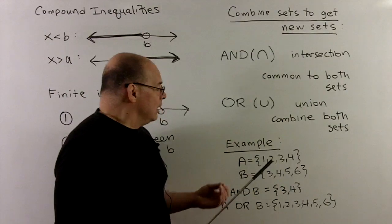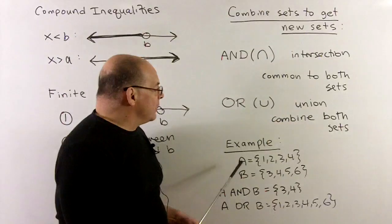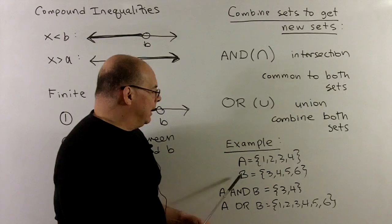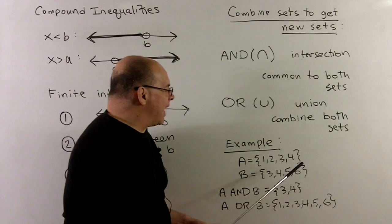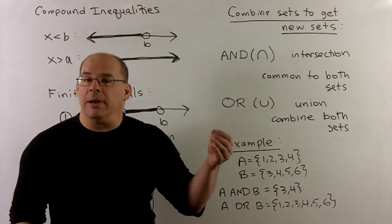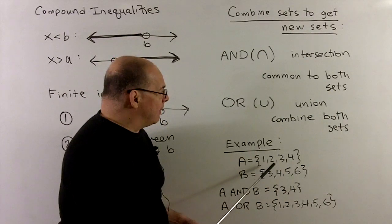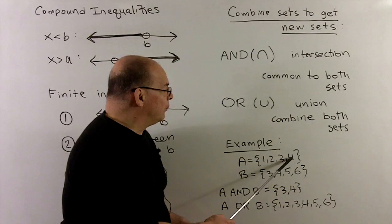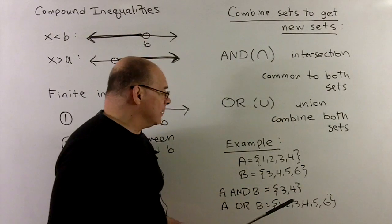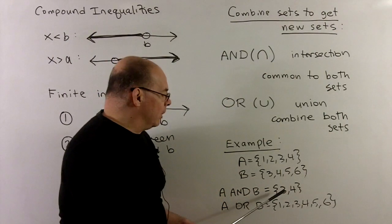For example, let's work with finite points. If set A is the four points {1, 2, 3, 4} and set B is {3, 4, 5, 6}, then A AND B — the intersection — contains only the points common to both. One is not common, two is not common, three is in both, four is in both, five and six are not in common. So the intersection of A and B is just {3, 4}.